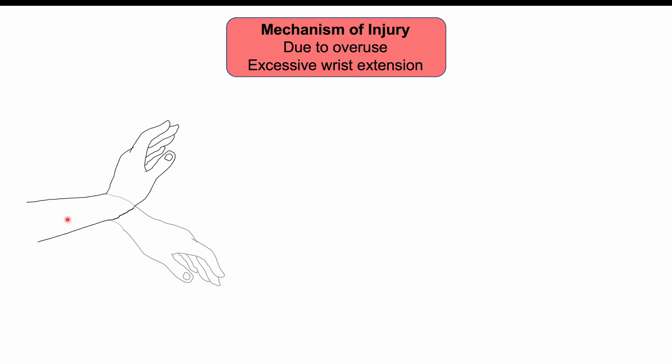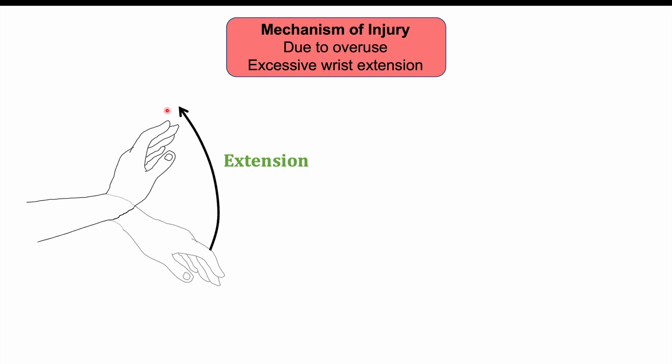The mechanism of action in lateral epicondylitis is due to overuse. If the wrist is completely straightened and bent forward, that is flexion; bringing it back is extension. The primary problem in this condition is excessive wrist extension. Wrist flexion can also contribute, but extension is the more important factor and is considered the primary mechanism of injury.